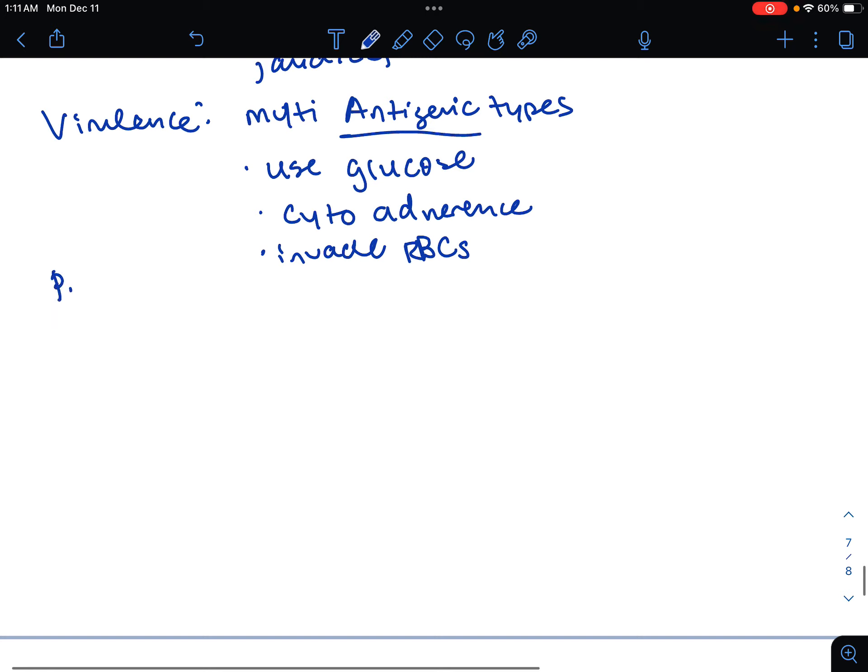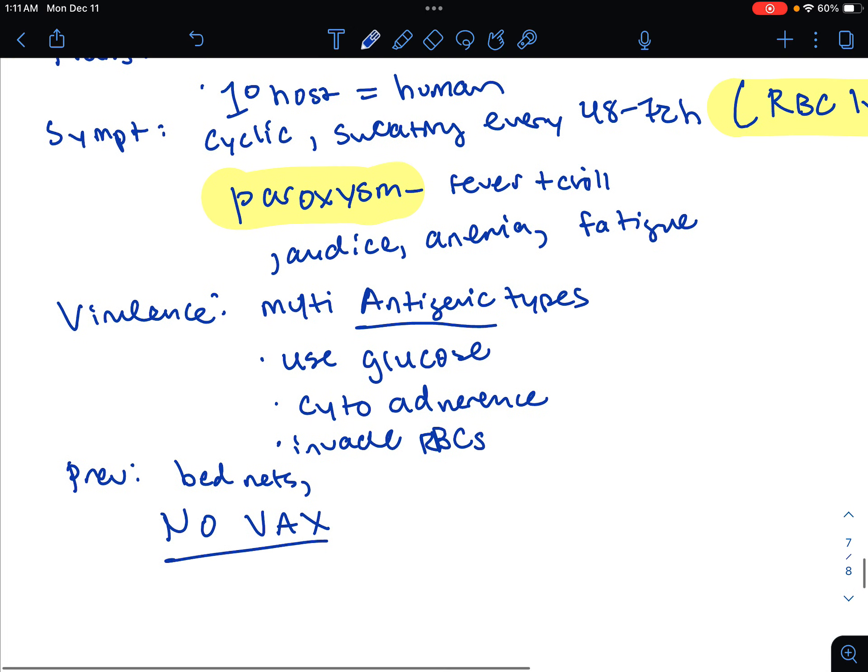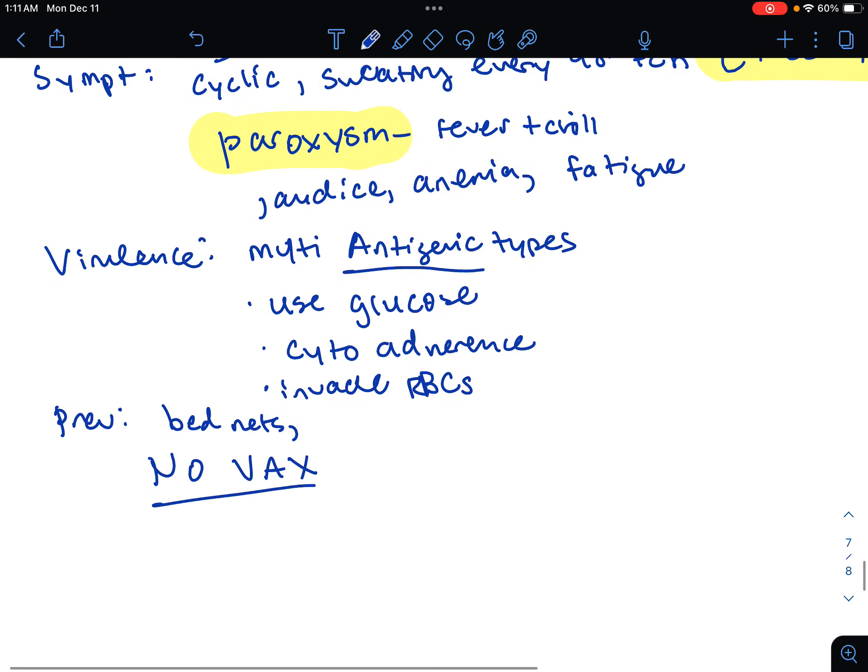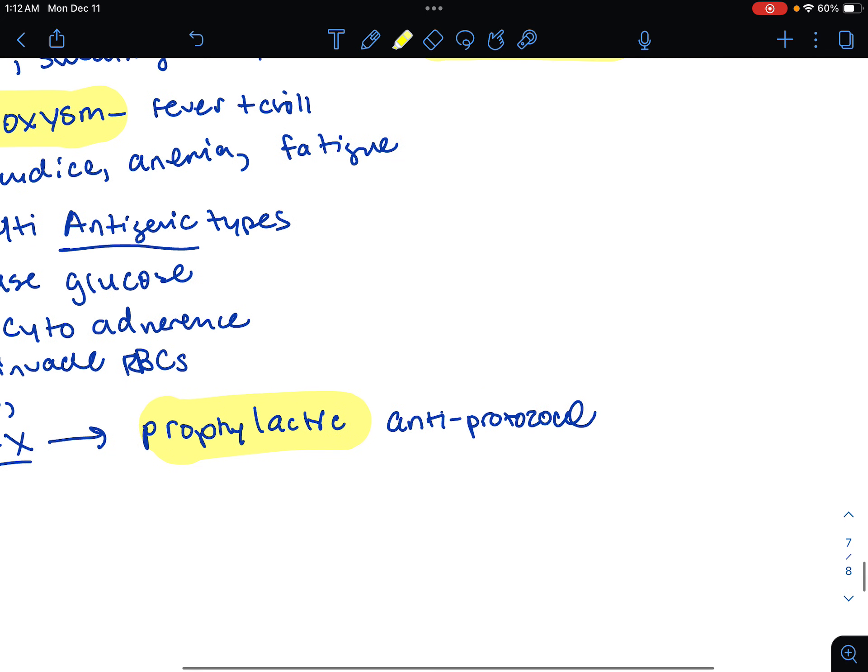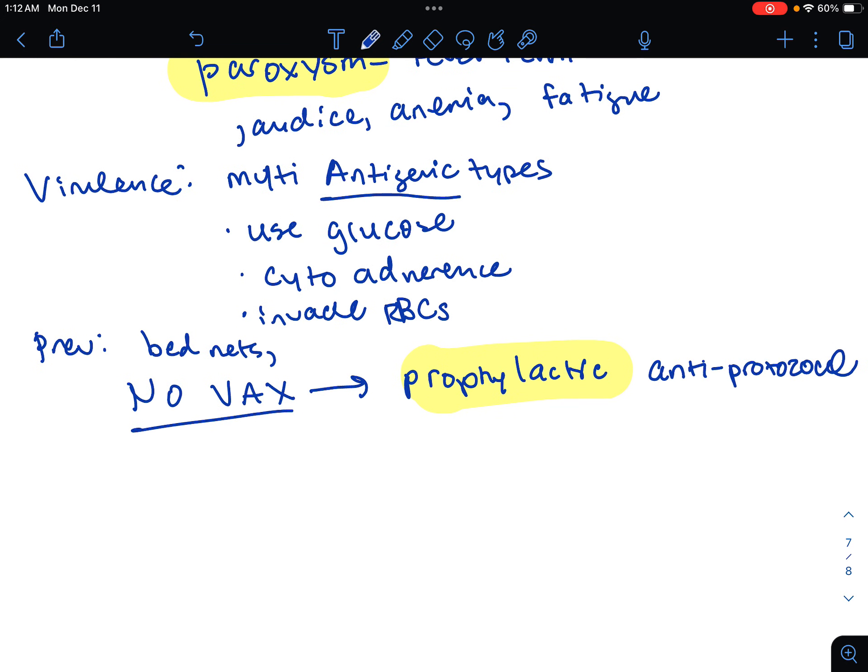Prevention: use mosquito control, bed nets. There's no vaccine available for malaria unfortunately. We're going to instead use the prophylactic antiprotozoal.